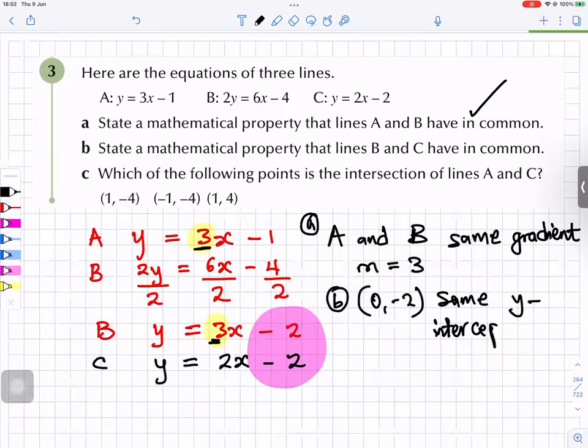For part b, we put the coordinate. Complete. Perfect. Part c, which of the following points is the intersection of lines A and C? Minus 1, minus 2.